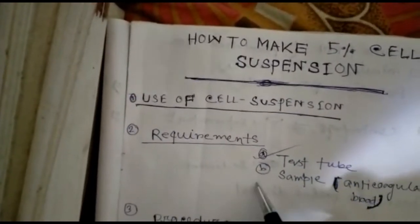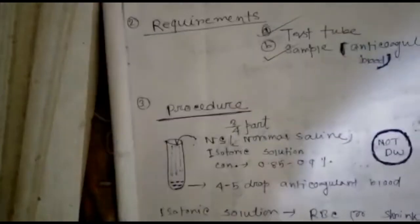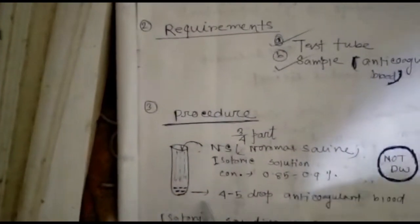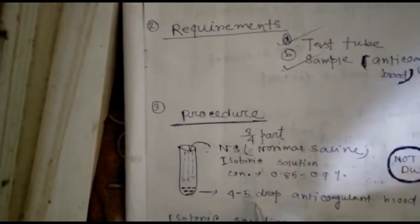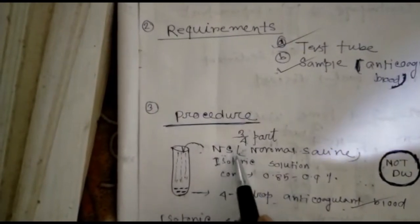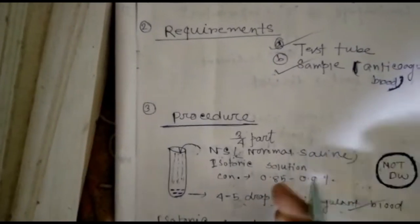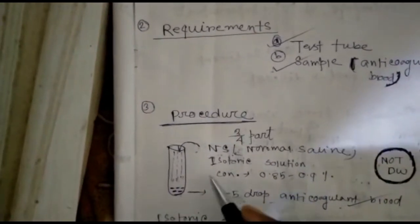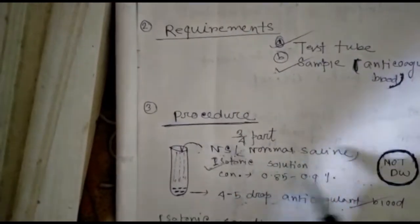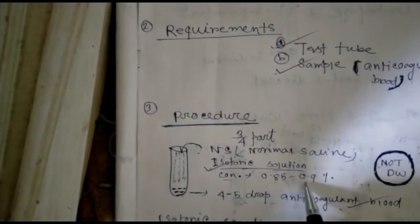For the sample, we need anticoagulant blood. Take a test tube and add four to five drops of anticoagulant blood. Then add three-quarters part normal saline. We do not use distilled water — we use normal saline because it is an isotonic solution with a concentration of 0.85 to 0.9 percent.